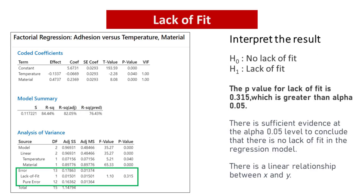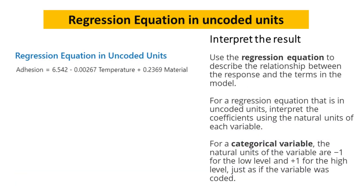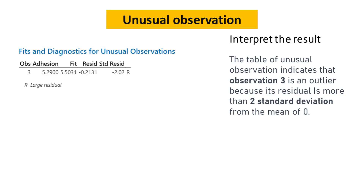The lack of fit test is a crucial tool for assessing the adequacy of a regression model. We obtained a p-value for lack of fit of 0.315, which is greater than the significance level alpha of 0.05. This indicates no significant lack of fit, and also suggests a linear relationship between x and y. The regression equation in uncoded units allows interpretation of coefficients in natural units of each variable. The table of unusual observations indicates that observation 3 is an outlier because its residual is more than 2 standard deviations from the mean of 0.